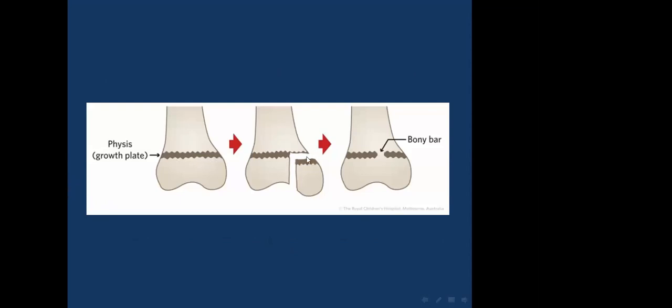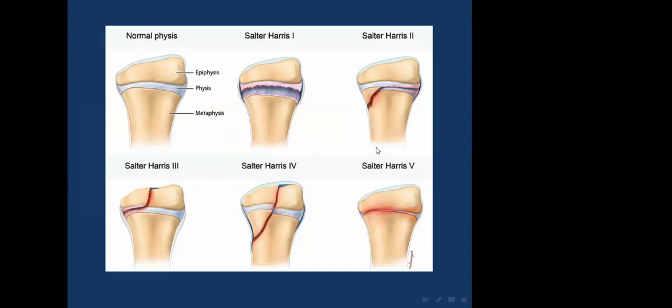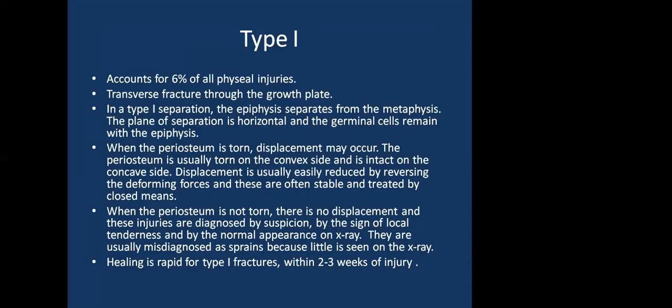The Salter-Harris classification for growth plate fractures: Type 1 accounts for 6% of all physeal injuries. It is a transverse fracture through the growth plate where the epiphysis separates from the metaphysis. The germinal cells remain within the epiphysis. When the periosteum is torn, displacement may occur and is usually easily reduced by reversing the deforming forces. When the periosteum is not torn, there is no displacement and the X-ray may appear normal. Healing is rapid within 2 to 3 weeks.